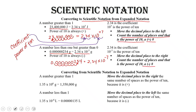Now, if we want to convert from scientific notation to expanded notation, we simply move the decimal place over the number of spaces indicated by the power of 10. If the power of 10 is positive, we move our decimal place to the right. If our power of 10 is negative, then we move our decimal place to the left, the same number of spaces as indicated by our power of 10.